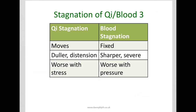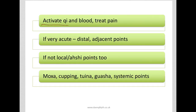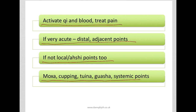Qi stagnation tends to move around a bit more, tends to be more distension and duller, and tends to be worse with stress. Whereas blood stagnation is more fixed — the pain is sharper and more severe, often bruise-like or stabbing, and it's worse with pressure. To treat qi and blood stagnation we need to activate the qi and blood and treat the pain. If it's very acute this will mean distal or adjacent points. Generally speaking it means local and shu points as well, and we can use moxa, cupping, and tui na alongside acupuncture.